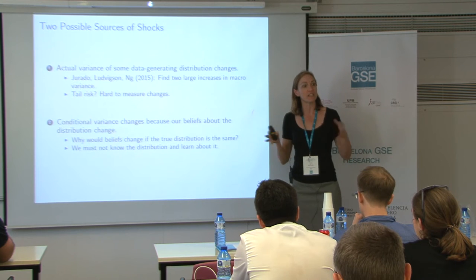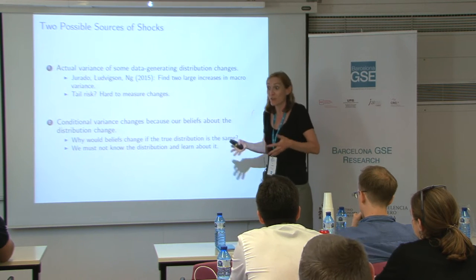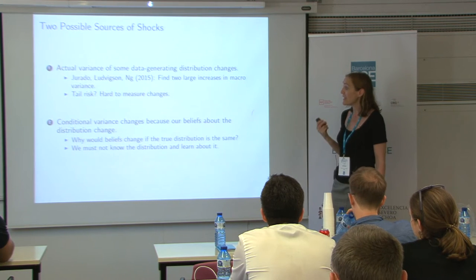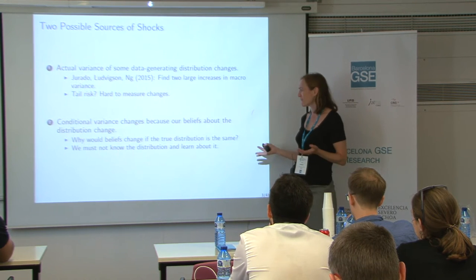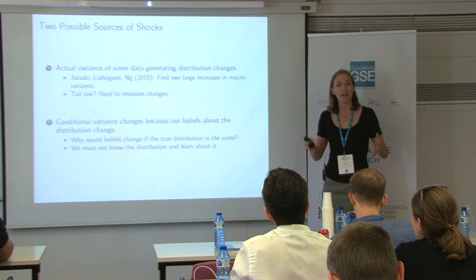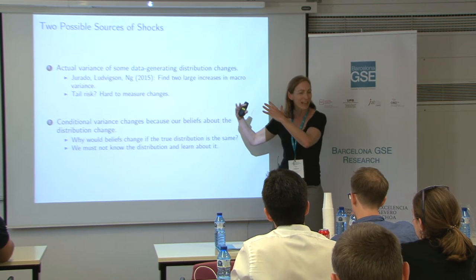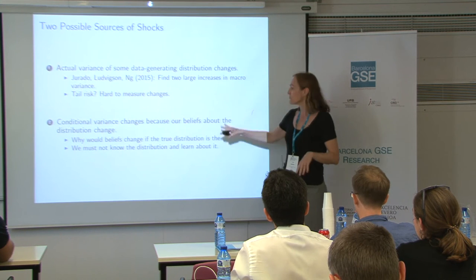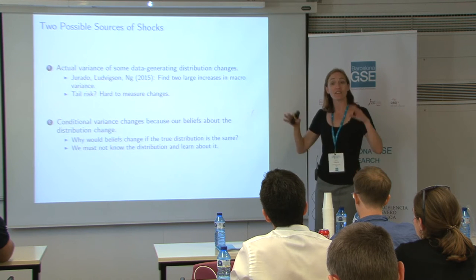But there's another source of changes in uncertainty or tail risk that hasn't been explored as much — that these are conditional variances. They're variances conditional on some data set, really about our beliefs, and they may change even if the true distributions are fixed. So a second source of changes in uncertainty is that our beliefs about the distribution change. We have to address why our beliefs would change if the true distribution was the same — we must not know the distribution, and we're getting new information and updating.